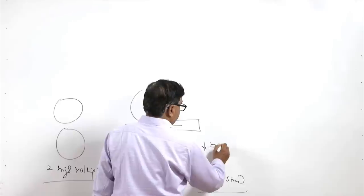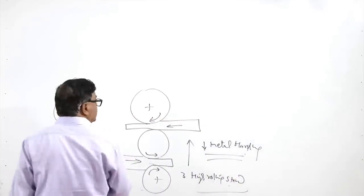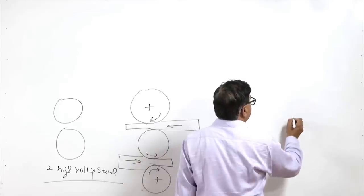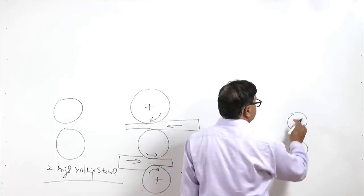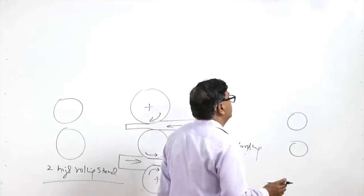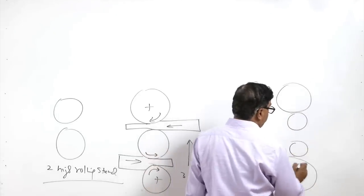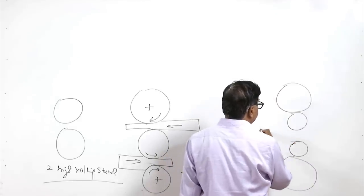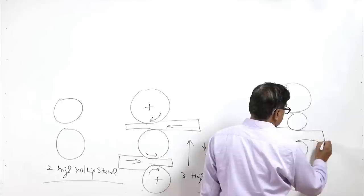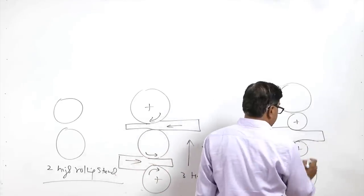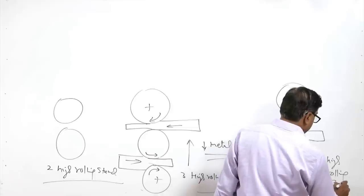The three-high rolling stand reduces the material handling needed for rolling. In a four-high rolling stand, small rollers are used for achieving a higher angle of bite. Since small rollers cannot be very rigid and strong, large diameter rollers are used as backup to provide suitable support, achieving a high angle of bite through the small diameter working rollers.